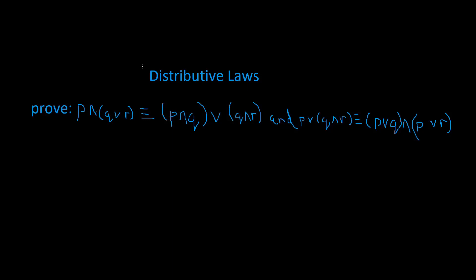Let's prove the distributive laws. Which one's the OR statement and which one's the AND statement? This one's the AND statement, and this one's the OR statement. So P is basically distributed to the Q and the R. I distributed the P and the AND to Q, and I distributed the P and the AND to R. Then we put the OR statement in the middle.